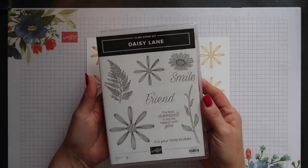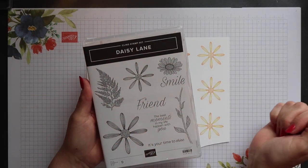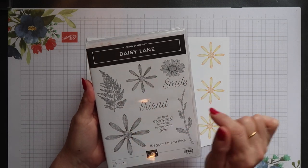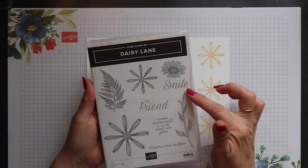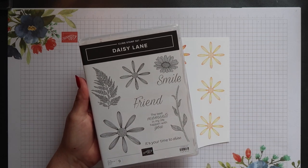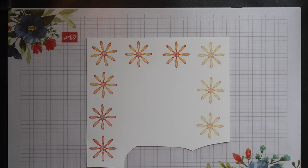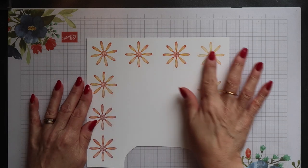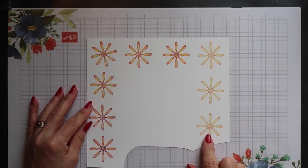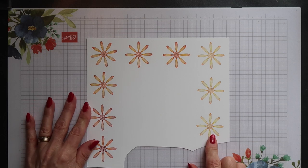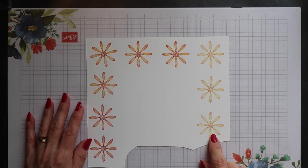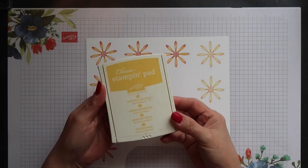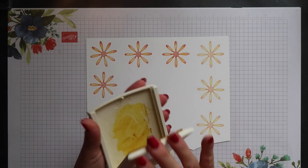This is the Daisy Lane stamp set. I'm using several images from this, the medium daisy and the smaller full daisy, as well as the sentiments and the stem. We also have a new punch that coordinates with the medium daisy. I've gone ahead and stamped most of the daisies I need for this project, but I actually need four of the lighter ones, so I'm going to show you how I created them.